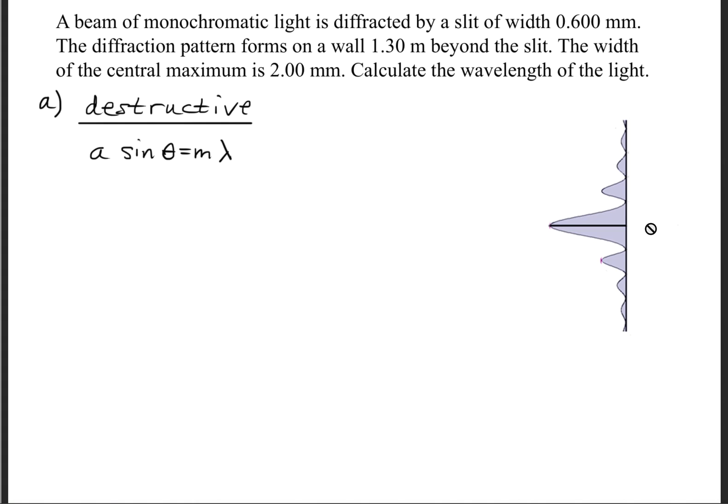So this is what it looks like right here. Now, we were told in the question that the width of the central maximum is 2 millimeters. So this whole entire width right here is 2 millimeters. Well, if I divide that by 2, I get 1 millimeter. That tells me the width of only half.